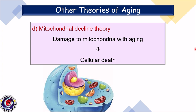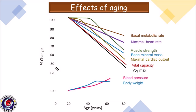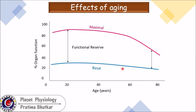Whatever the process, what are the manifestations of aging? As indicated in the graph, with advancing age there is a decrease in BMR, maximal heart rate, muscle strength, bone density, maximal cardiac output, vital capacity, and VO2 max, while blood pressure and body weight increase. Another graph shows changes in organ function with advancing age: the blue line indicates the resting level of organ function and the red line indicates the maximum percentage of organ function achievable if required. The difference between the two lines is the functional reserve. With advancing age, there is a slight decline in basal organ function, but after age 60 the maximum achievable function decreases drastically — in simple words, functional reserve decreases significantly with advancing age.